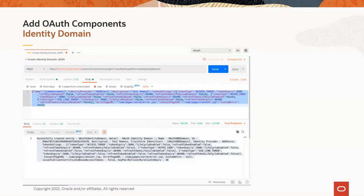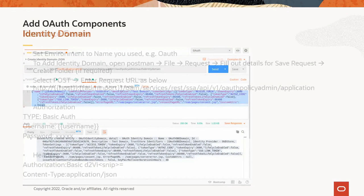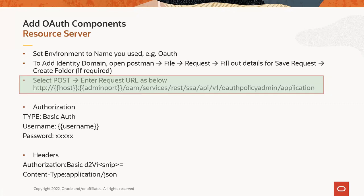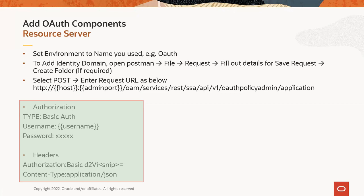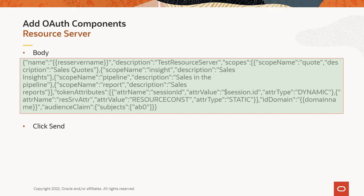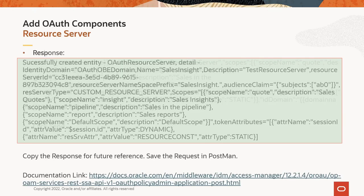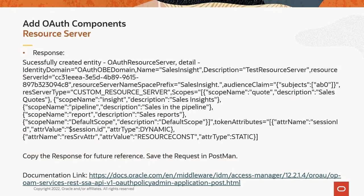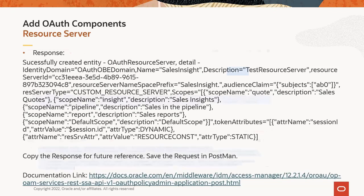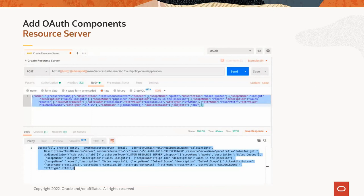This screenshot shows when the identity domain was added in the lab. Here we'll add a resource server. Part of the new request setup is similar to the previous step — make sure you use the correct URL as shown in this slide. Add details to the authorization and header sections of the Postman request. Add the body to the new request as shown and click Send. The slide shows the successful response — save the response and this request. The link here is the OAM REST API document to add a resource server, along with a screenshot of adding a resource server from the lab.